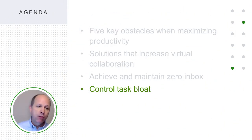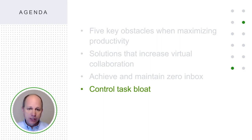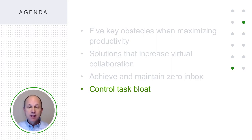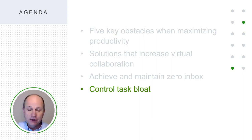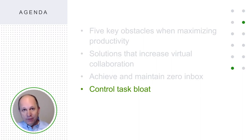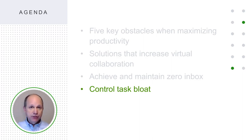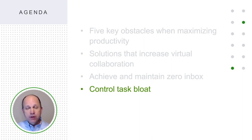The final topic is how to control task bloat. If you want another truth — pull up Evernote or OneNote since you just adopted that — type down this: you can achieve zero inbox, but you can never achieve zero task list. As a matter of fact, if you have achieved zero task list, you probably are not challenging yourself as much as you should be. You're probably not taking on responsibility commensurate with the value you can bring.